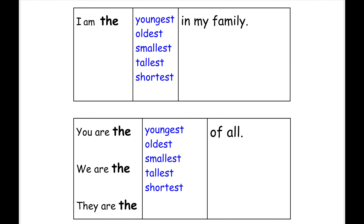Now if you want to talk about 'you', you need to say 'you are'. You are the youngest of all. You are the oldest of all. We are the smallest of all. We are the tallest of all.